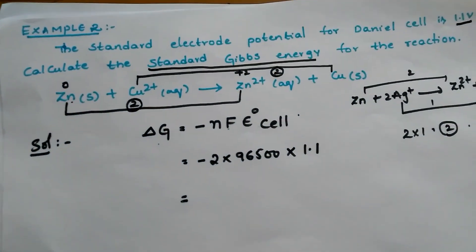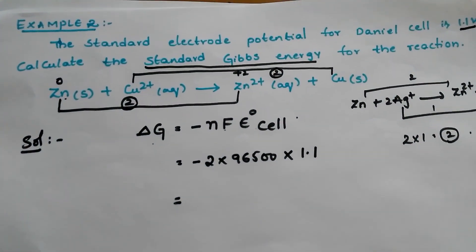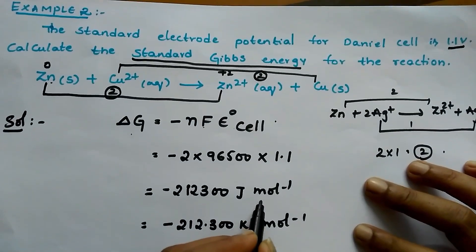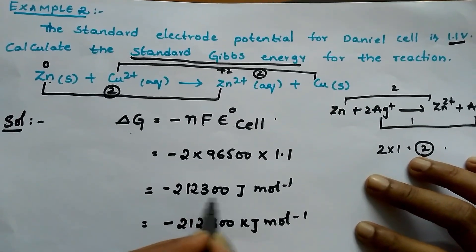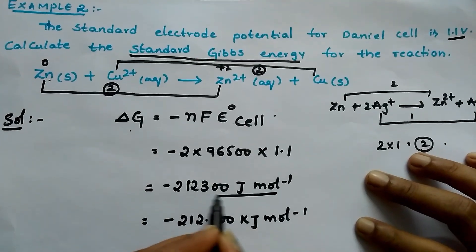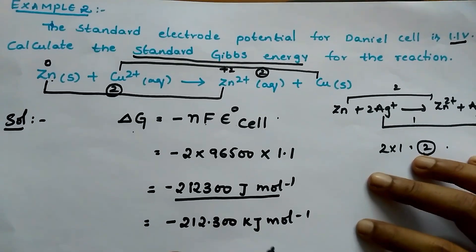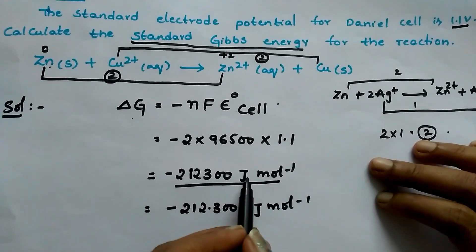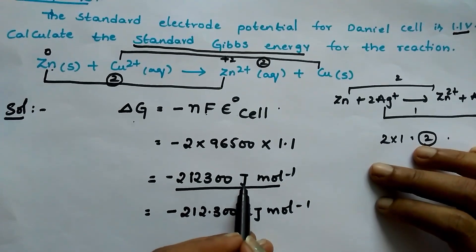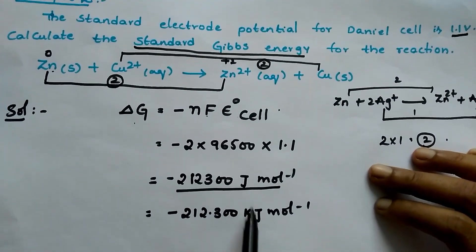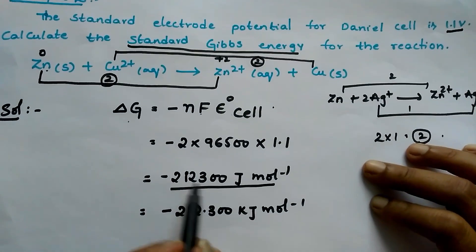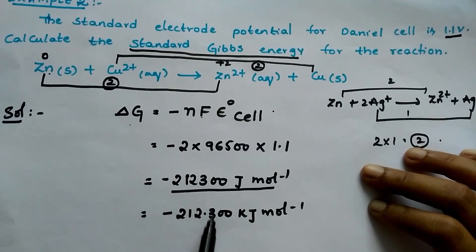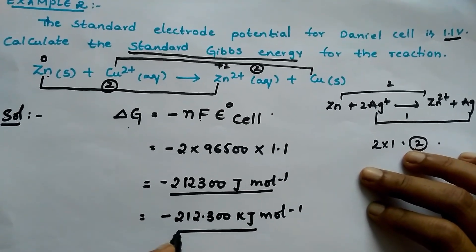Substituting the values, we get 212,300 joules per mole. To convert to kilojoules, divide by 1000, since 1 kJ = 10³ J. This gives the answer in kilojoules.